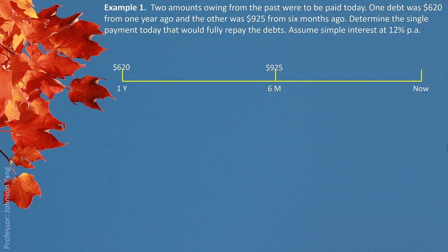Let's look at the situation. A $620 debt was supposed to be paid one year ago, and a $925 debt was supposed to be paid six months ago. But they were not paid — they are still there. Now we want to pay the debt together. How much do we need to pay? So for $620, we need to consider the interest situation to see how much it is worth now.